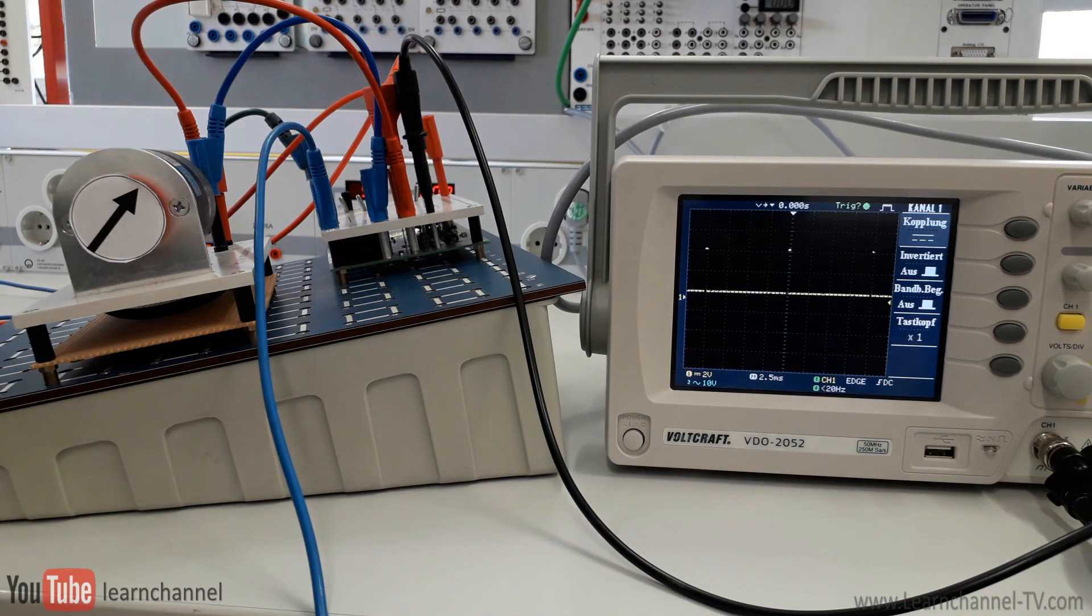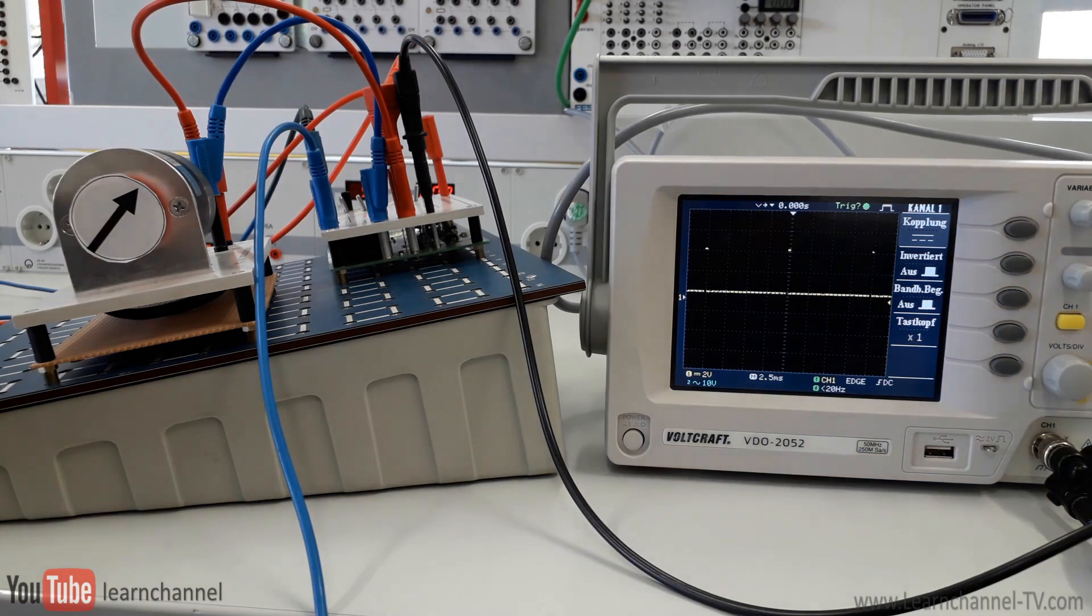The average voltage can be determined simply by multiplying the duty cycle by the pulse's high level. Here are some examples.